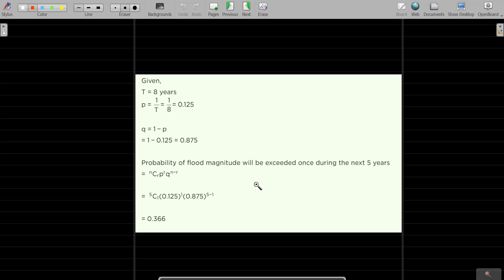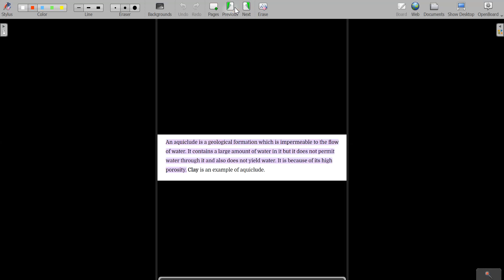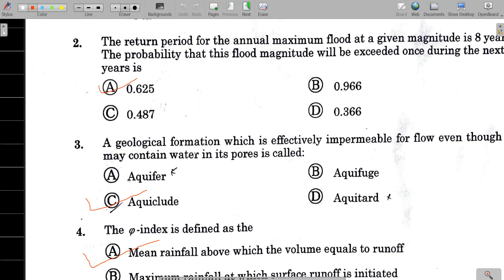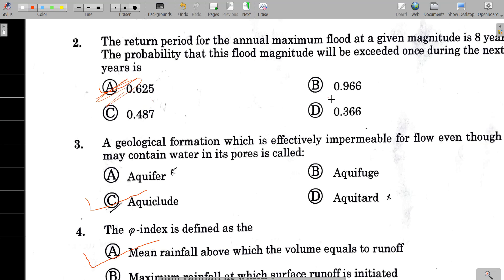Q equals 1 minus P, which is 1 minus 0.125 equals 0.875. The probability of flood magnitude exceeding once in 5 years uses the formula NCR times P to the power R times Q to the power N minus R. So 5C1 times 0.125 to the power 1 times 0.875 to the power 4. After calculation, the answer will be 0.366. So the correct option is A, 0.366.